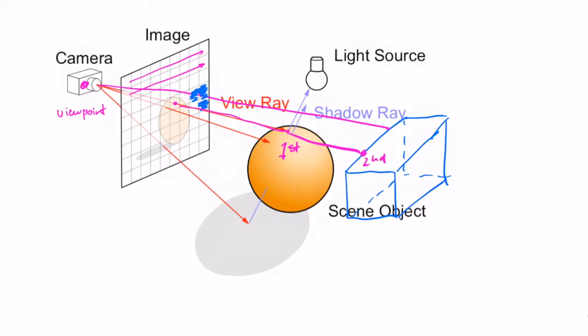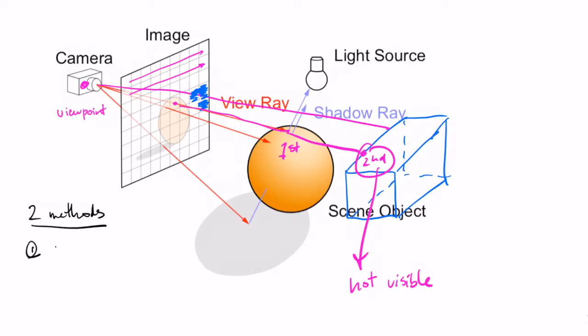For the simple case, raycasting assigns the color of the first object hit to the pixel. To render a scene we need to do this for every pixel. There are different methods for this. The first is called the Z-buffer: all 3D objects are projected onto the screen one by one, and during projection we calculate the distance between the viewpoint and each object. Only the closest object is assigned to each pixel. This is a very old method that is rarely used in practice because it can be computationally very slow.